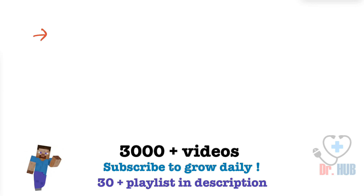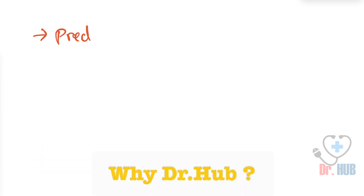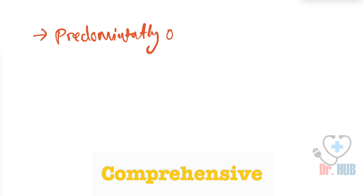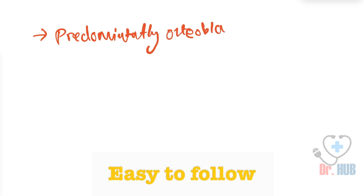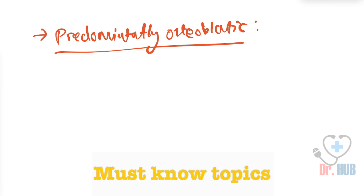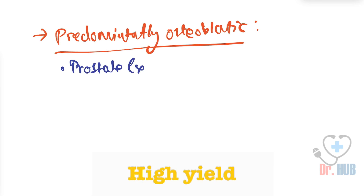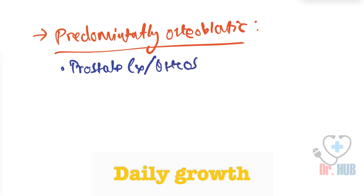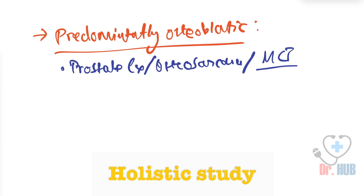First, we look at the predominantly osteoblastic category. This includes prostate cancer, osteosarcoma, and MCT — which stands for medullary carcinoma of the thyroid.